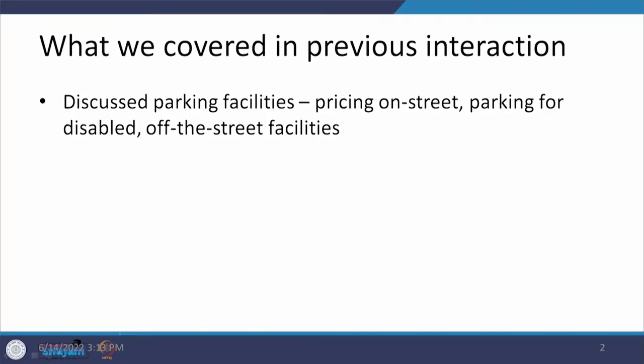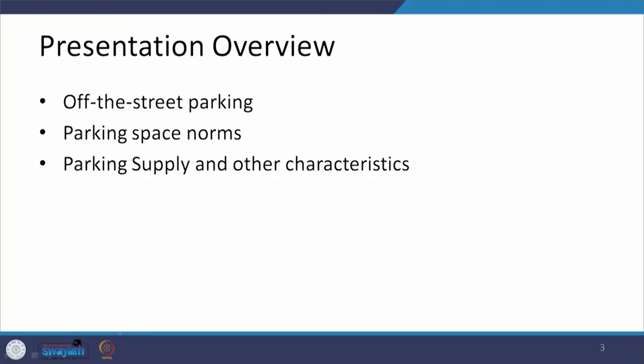Dear students, let us start our discussion on the design of facilities, and as part of it we have been discussing about parking facilities. In the previous interaction we talked about the pricing ways in which on-street parking can be priced by putting either the disc, meters, or coupons. We talked about parking for disabled people, then started discussing off-street parking facilities — surface lots and underground parking. Today we continue with the rest of the off-street parking facilities, the various patterns, parking space norms, parking supply, and related characteristics.